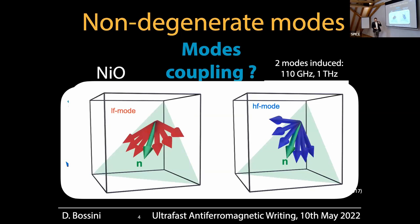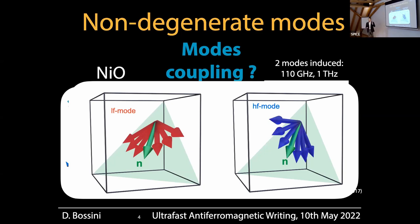At first glance it doesn't make sense, because we can write down the Heisenberg Hamiltonian, diagonalize it, and get eigenstates and eigenfrequencies — the magnon modes — which are orthogonal in Hilbert space. In this particular case they are also kind of orthogonal in real space: when you drive the low-frequency mode the Néel vector oscillates in-plane, and when you drive the high-frequency mode the Néel vector oscillates out-of-plane. Let's keep that question open and now introduce the way we drive magnons in nickel oxide.